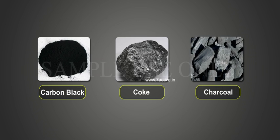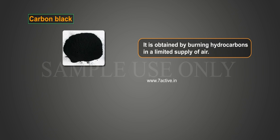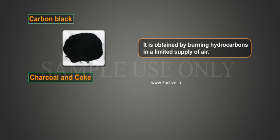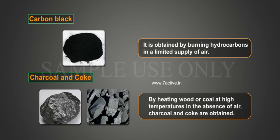Let us discuss amorphous allotropes: carbon black, coke, and charcoal. Carbon black is obtained by burning hydrocarbons in a limited supply of air. Charcoal and coke are obtained by heating wood or coal at high temperatures in the absence of air.